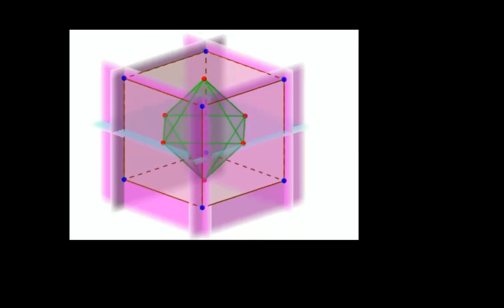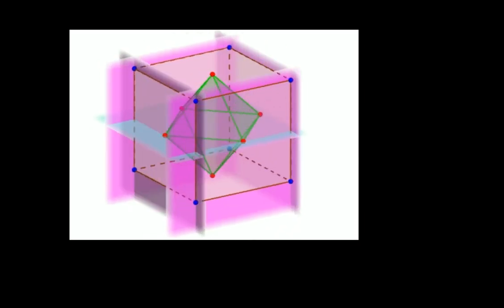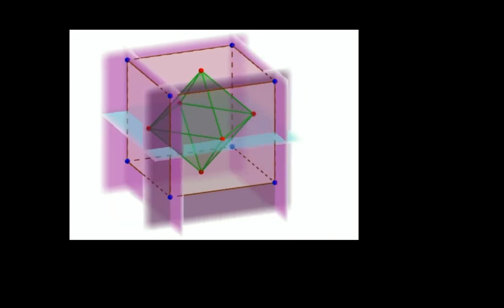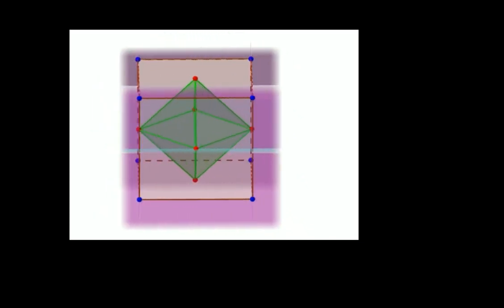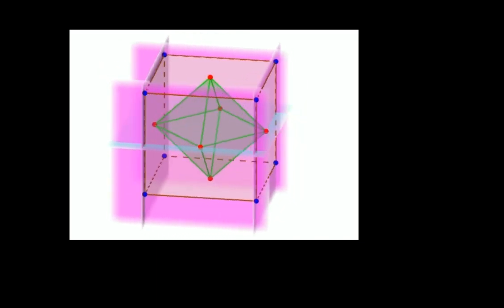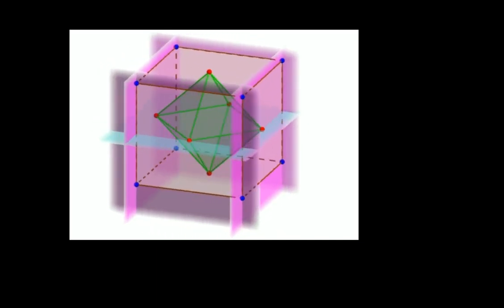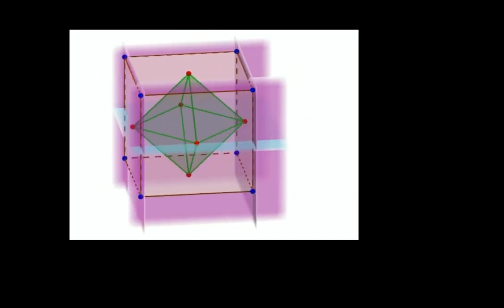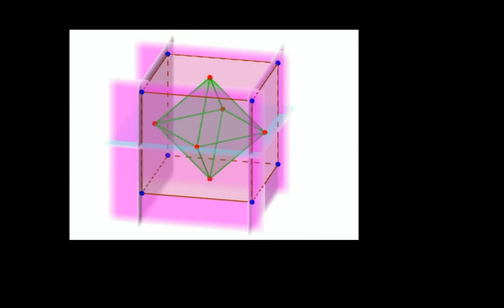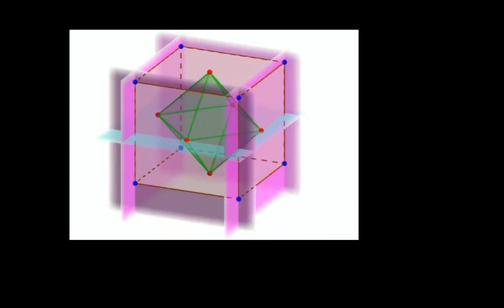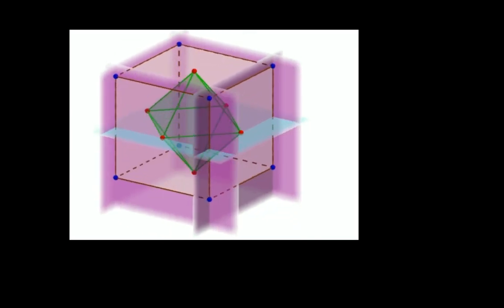But hang on, do these planes all contain a common point? Well, they do. It's just that that point is not finite. If you think about what we were saying about infinite elements before, you should be able to convince yourself that these four purple planes have a common point. It's just that that point is at infinity.